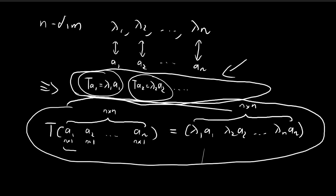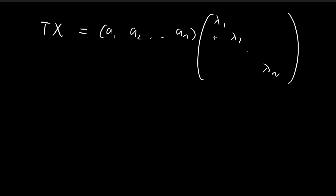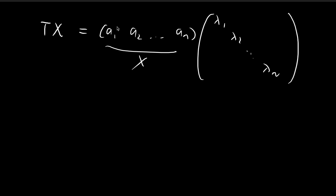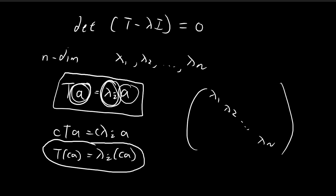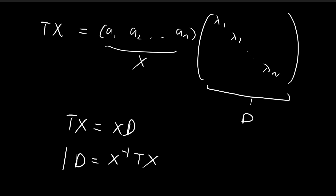Now I'm going to rearrange this. On the left-hand side I have T, and I'll call the eigenvector matrix X for convenience, giving TX. On the right-hand side, I can rewrite it as X multiplied by a diagonal matrix D, where the diagonals are equal to the eigenvalues and everything else is zero. So TX = XD, meaning we can find D by taking D = X⁻¹TX. That is the process of diagonalization. Note that since I'm taking the inverse, this is only possible if all n solutions are unique — if there are repeated eigenvalues (a degenerate solution), it will not be possible to diagonalize the matrix.